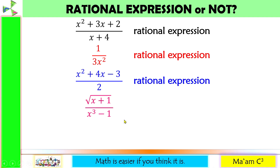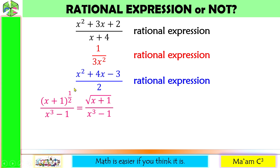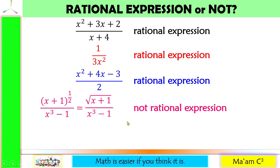How about this one? A square root of (x plus 1) all over x cubed minus 1. If we convert the square root of (x plus 1), this becomes quantity (x plus 1) raised to one-half. Now our exponent is not an integer but a fraction. Since the numerator is no longer a polynomial, even though our denominator is a polynomial, this is not a rational expression. The numerator is not a polynomial because the exponent is not an integer.